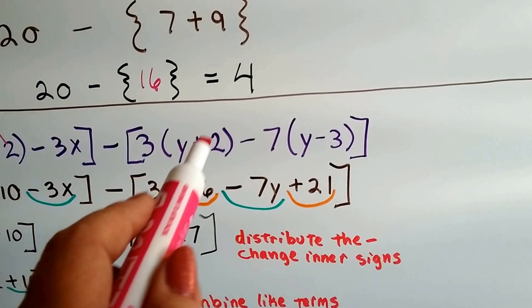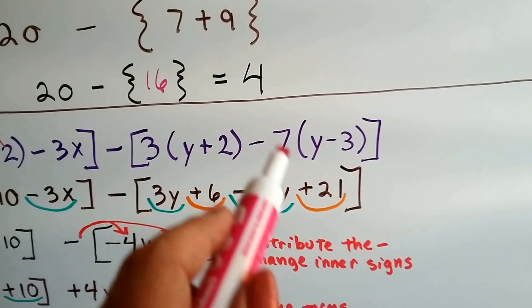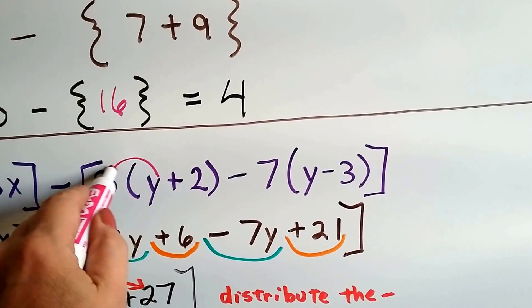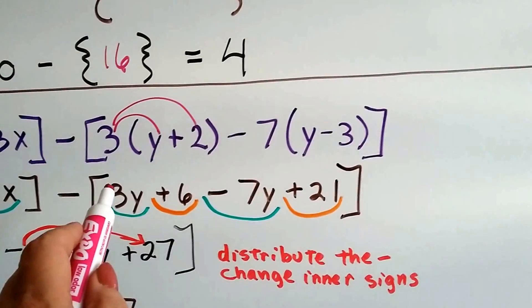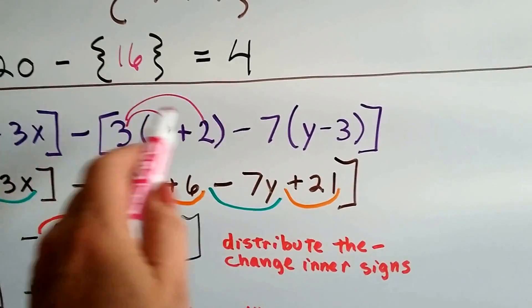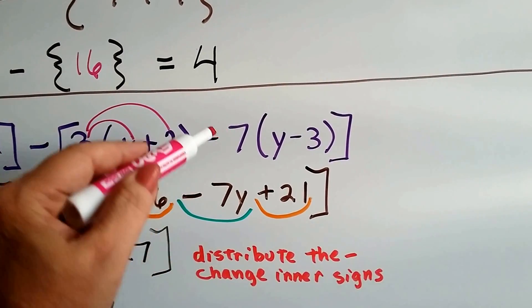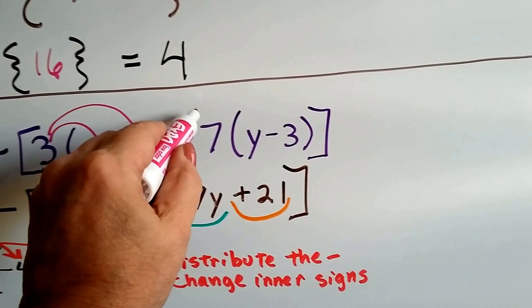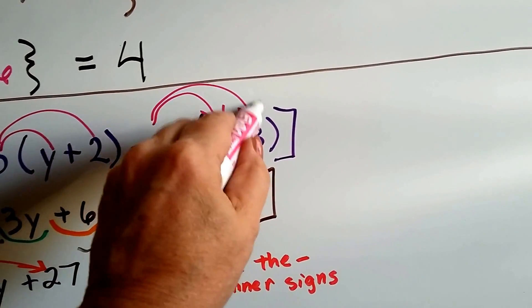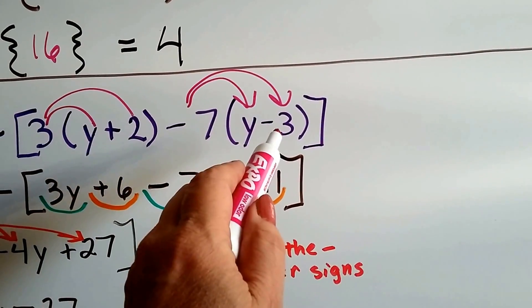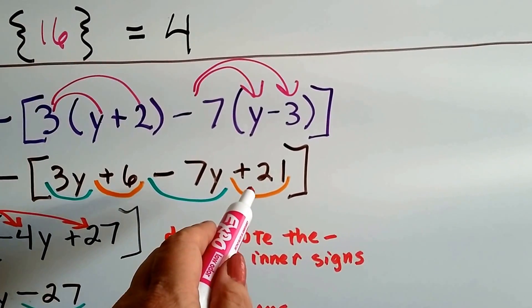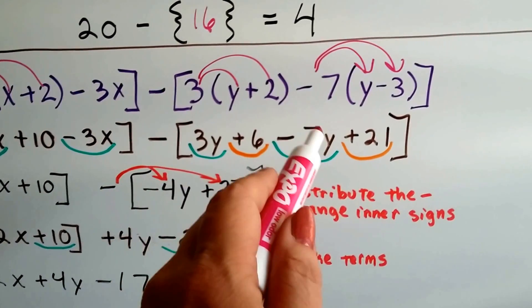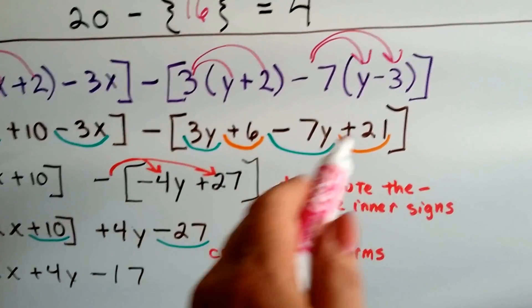Let's go on this side. We've got 3 and a y plus 2 minus a 7 and a y minus 3. So now we're going to distribute. We've got 3y plus 6. And now we've got negative 7 times y, which gives us a negative 7y. And negative 7 times a negative 3 is a positive 21.